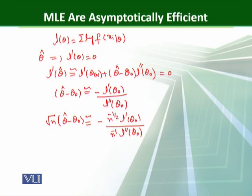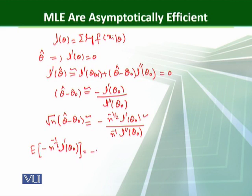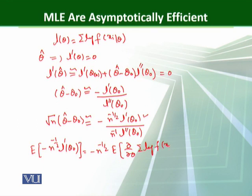First, consider the numerator. Taking the expected value of minus n to the power minus one-half times L dash theta naught, this equals minus n to the power minus one-half times the expected value of the partial derivative with respect to theta of the sum of log f of xi given theta. We know that the expected value of the first derivative of the log-likelihood equals 0, so this whole term becomes 0.